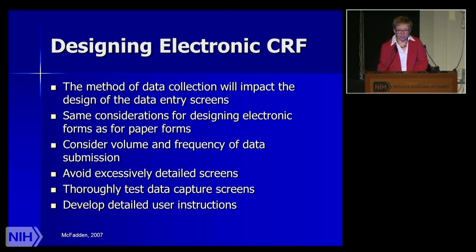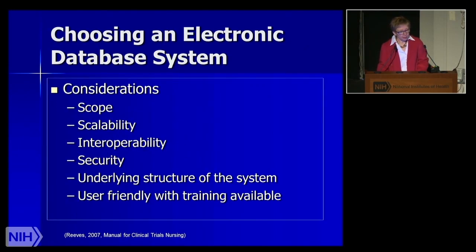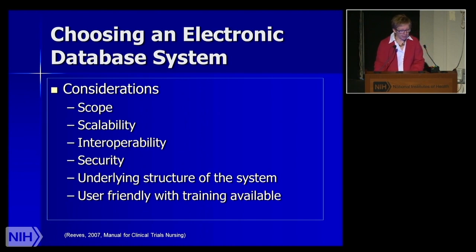User instructions for electronic systems are vital. When choosing an electronic data system, think about its scope, scalability, and how it will be used over the long term. Consider whether it has the ability to adapt and change, interoperability with other systems, how secure it is, whether it has a solid underlying structure, and whether it is user-friendly.